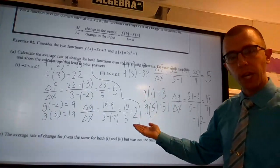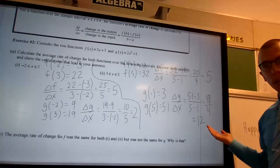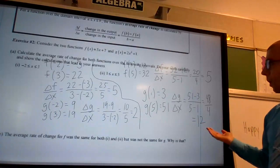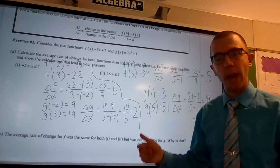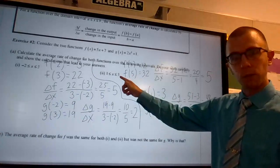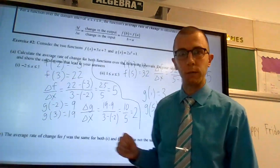Well, our first interval, that average rate of change was 2. The second interval, that average rate of change is 12. So g of x is changing a lot faster in this interval than it did in that first interval.